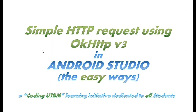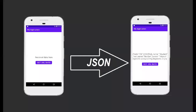Hello and welcome to today's video where I will show you a simple way to send an HTTP request using OKHTTP, the latest version — the third version — in Android Studio, and as always we're going to try and do it the easy way. We will have a simple user interface with a text view that will display the received data and a button to get the data from the URL.